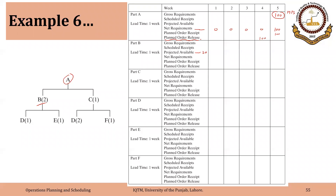The parent of B is A, so gross requirements of B will come from planned order release of A. The gross requirements will be 100 times 2, so they will be 200. We will have the inventory of 20 available until week 3, so the net requirements in week 4 will be 200 minus 20, giving 180.